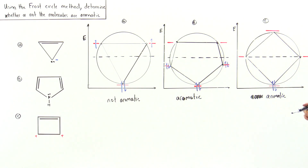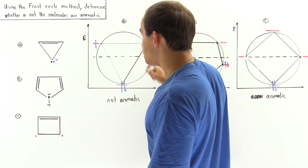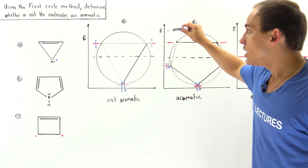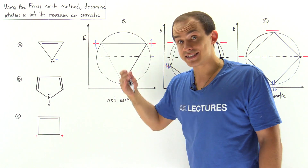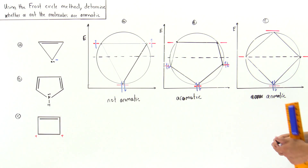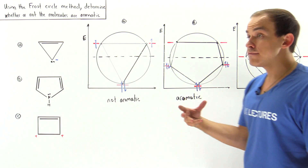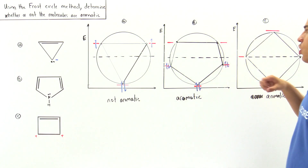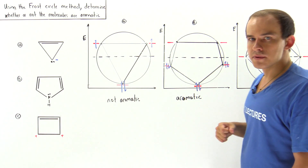By the Frost circle technique, molecule C is in fact aromatic. So molecules B and C are both aromatic, while molecule A is not — because in molecule A, two electrons go into higher-energy anti-bonding orbitals, destabilizing the system, whereas in B and C, all electrons fit snugly into the lower-energy bonding pi molecular orbitals.